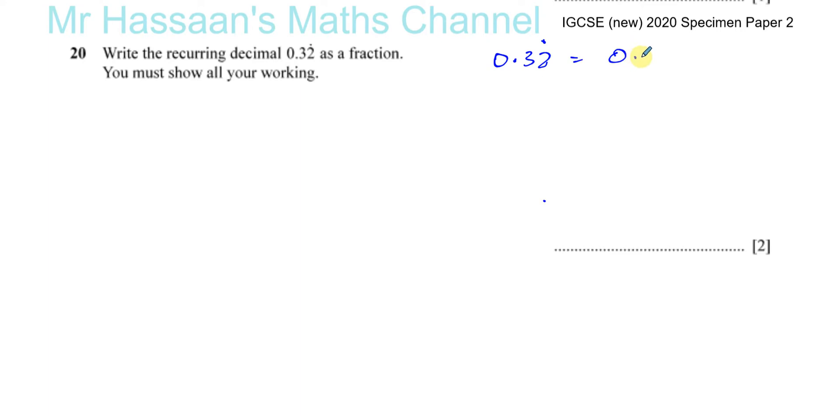If it was, for example, just 0.3 recurring, then that would be 0.3 and that three continues on forever and ever. If it was, for example, 0.3 recurring, then that three continues on forever and ever.